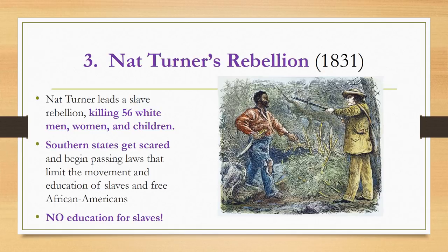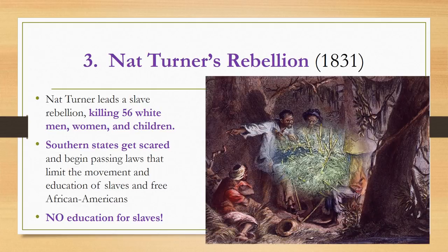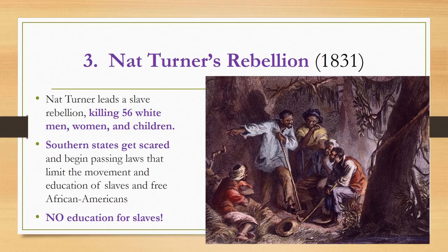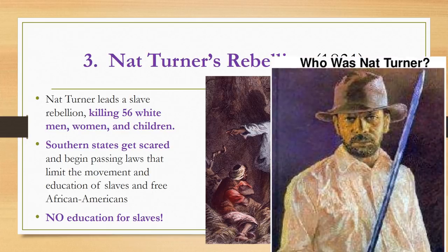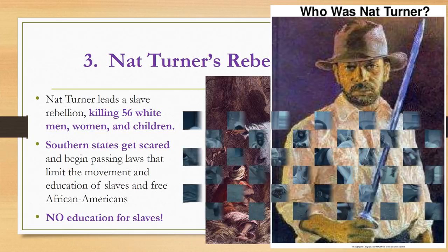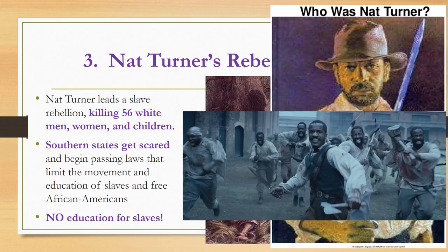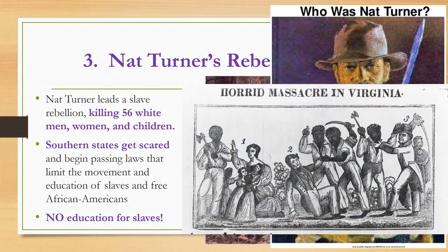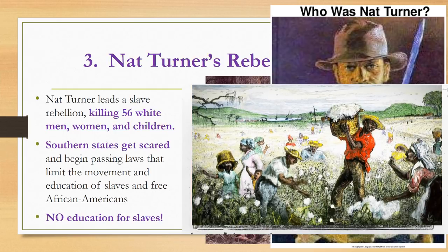Nat Turner's Rebellion was the next step that led to the Civil War. This happened in the year 1831. Nat Turner was a slave working on a farm in Virginia. He is famous for leading a slave rebellion in which he conspired with other slaves to rise up against their white masters and their families and kill them. Nat Turner and his men killed 56 white men, women, and children before they were stopped. Unfortunately, Nat Turner's Rebellion made life even harder for slaves in the south.